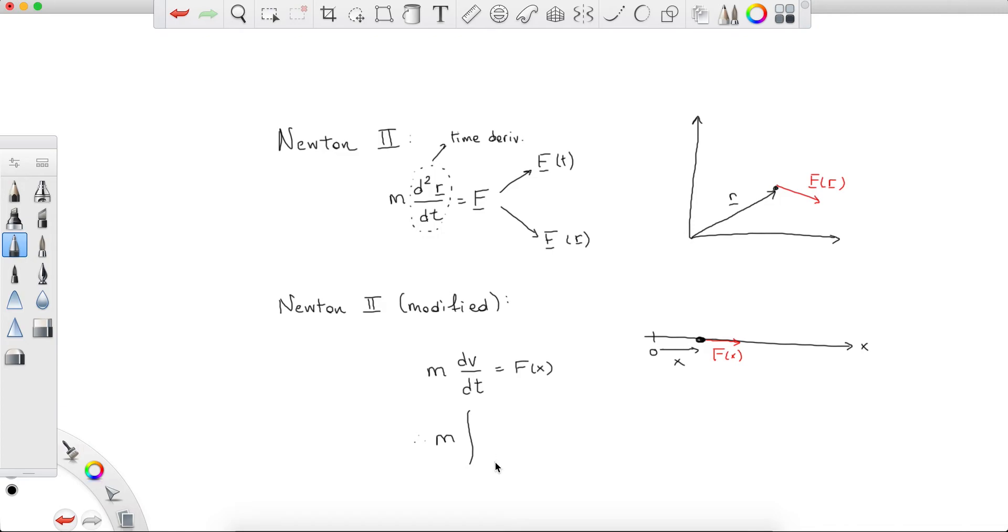So m times integral, now what are we integrating over? So say the force acts on the particle when it has position xa and xb, so maybe this is xa and this is xb. And the force is acting here in this interval, then we're integrating from xa to xb of dv/dt. What are we integrating with respect to? Position. Why? Because our force is given in terms of position.